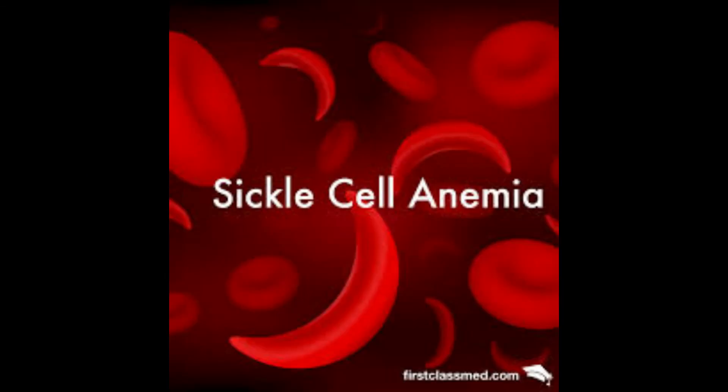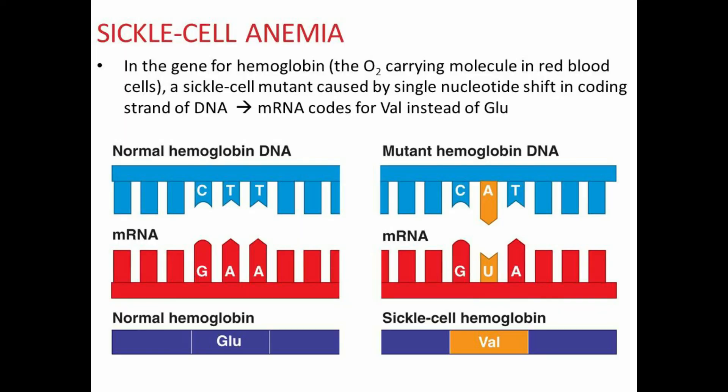Sickle cell anemia hemoglobin beta chain amino acid sequence at the same positions: valine, histidine, leucine, threonine, proline, valine (instead of glutamic acid), glutamic acid. This illustrates the molecular basis of heredity and the disease of sickle cell anemia. Thanks for watching.